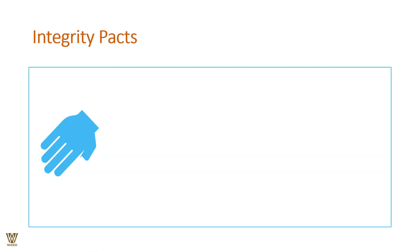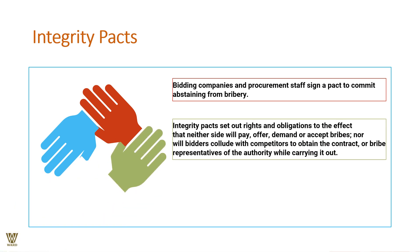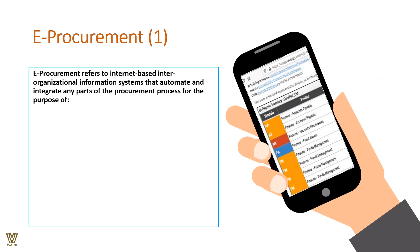Integrity pacts require that bidding companies and procurement staff sign an agreement — a memorandum of understanding — stating they are not involved in any malpractices. The integrity pact establishes rights and obligations stating that neither party will demand or accept anything improper, and that bidders will not collude with competitors. An independent watchdog oversees implementation to ensure all parties uphold their commitments.